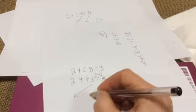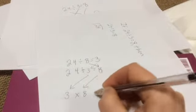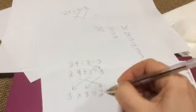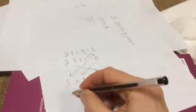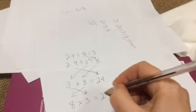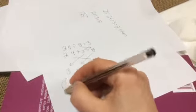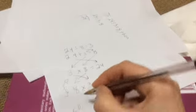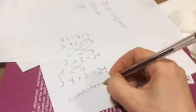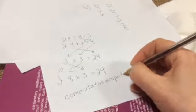Now we're going to take the divisor and the quotient and multiply them together and see if they make 24. 8 times 3, yep. 8, 16, 24. Okay, that matches up. Now we're going to use the commutative property to switch the factors and get the same product, which as we know with the commutative property of addition and multiplication, if you switch the factors, switching the order of the factors does not change the product.